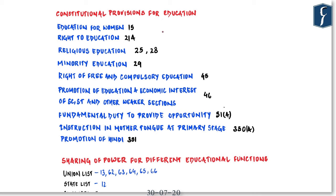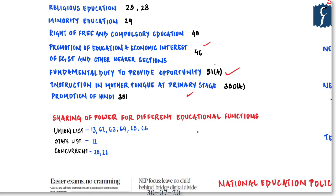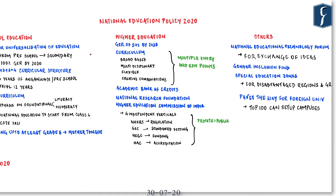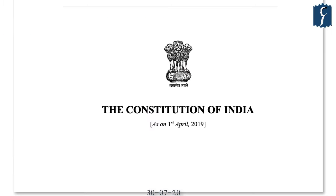We shall first cover the constitutional provisions related to education, starting with fundamental rights, directive principles of state policy, fundamental duties, and the section of special directives. Then we will understand the administrative setup — the division of items related to the education sector between the Union as well as the states. Then we will cover the important provisions of National Education Policy 2020 dealing with school education, higher education, and some other announcements.